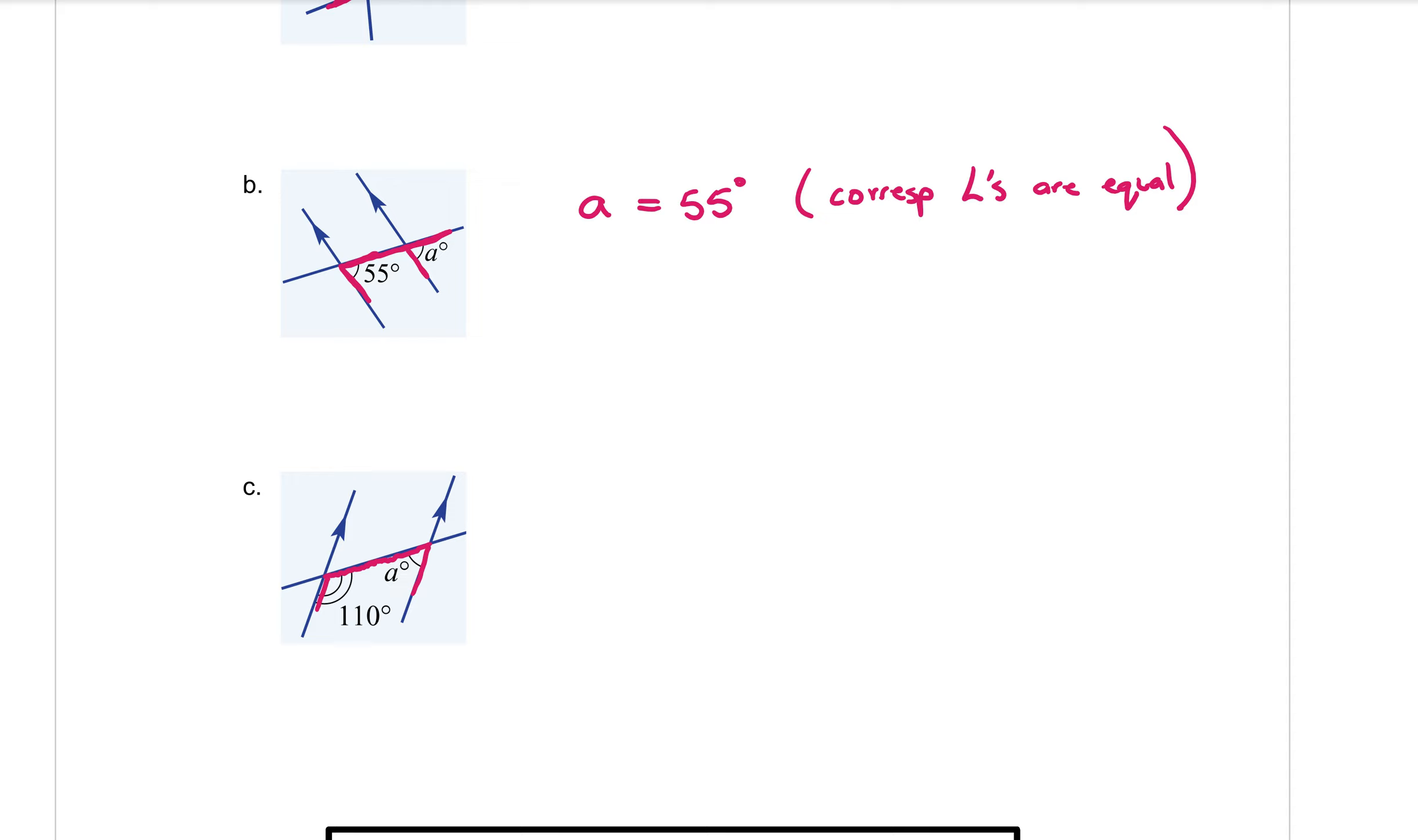So we write that as an equation. We've got A plus 110 is equal to 180 degrees. Now we write our reason. This is the other co one. So we write coint, co-interior angles. And co-interior angles equal 180 degrees. Okay, now we still have to find out what A is equal to. Because we had this 110 here. So I would need to subtract 110 from the 180. So that's equal to 70 degrees. And that's it. That's the three rules for today.